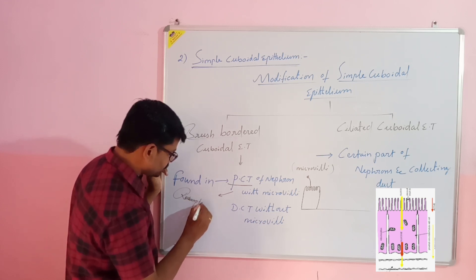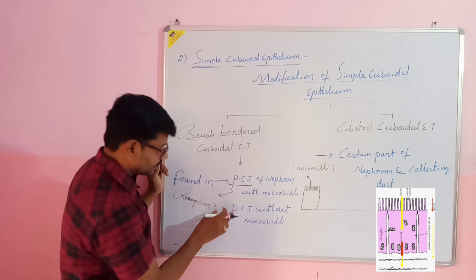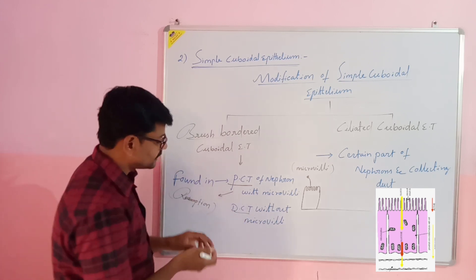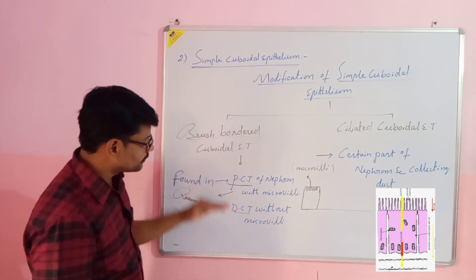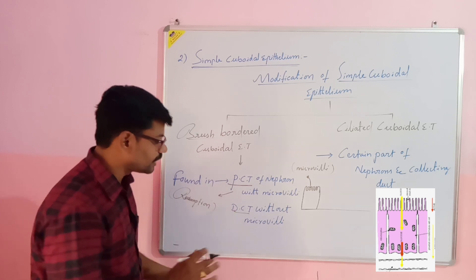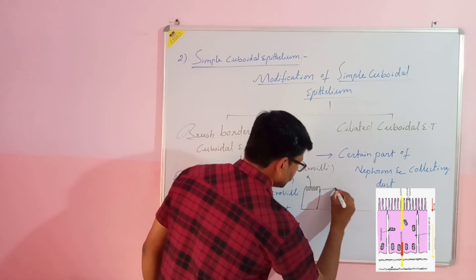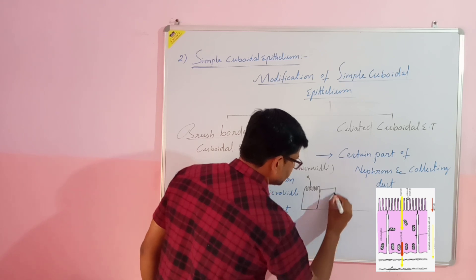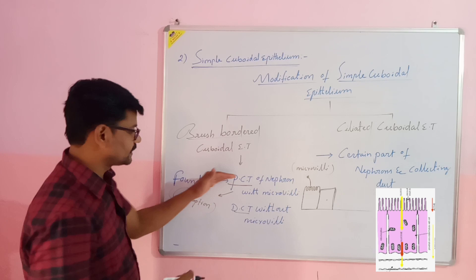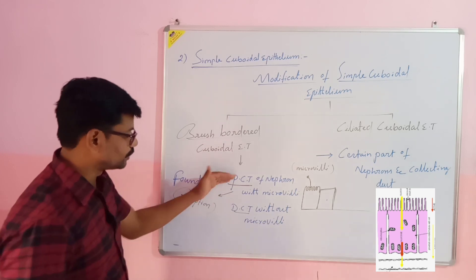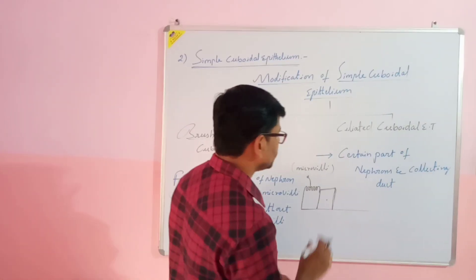The brush border cuboidal epithelium in the PCT is responsible for reabsorption of nutrients. In the DCT, cuboidal epithelial tissue is also present, but it does not have any microvilli — it has just a flat surface. That is the major difference between PCT and DCT, both of which are parts of the nephron.